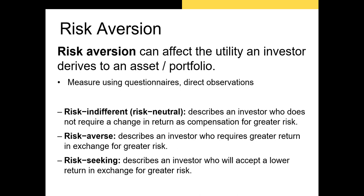The problem with utility functions and risk aversion is that it's almost impossible to measure them. In the real world, personal financial planners use surveys and questionnaires to assess how risk-averse an individual is. Those questionnaires might ask the investor how they feel about a variety of investments or activities. Based on those responses, we can infer a level of risk aversion. The difficulty in estimating utility and risk aversion is part of the reason why people tend to focus on the first step of modern portfolio theory — the security selection step. We use utility theory in the second step, the asset allocation step.